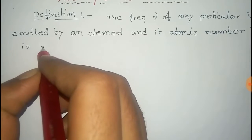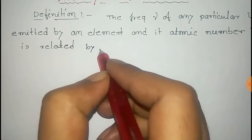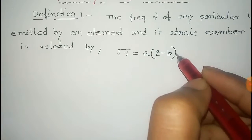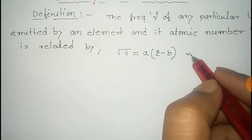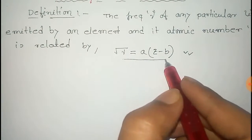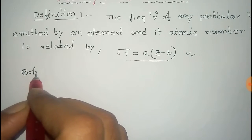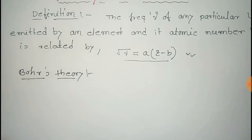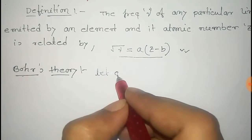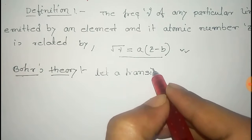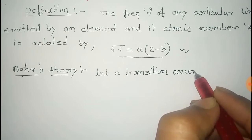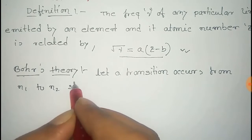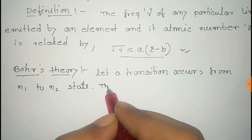Moseley's equation is given by: root of ν equals a times Z minus b. To prove this — Moseley's Law — we have to use Bohr's theorem. From Bohr's theorem, consider that a transition occurs from state n1 to state n2.